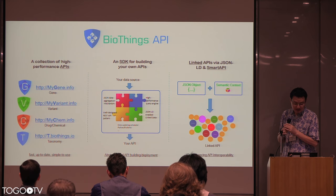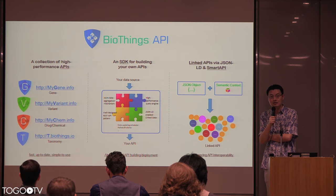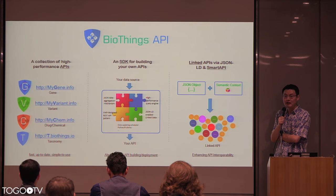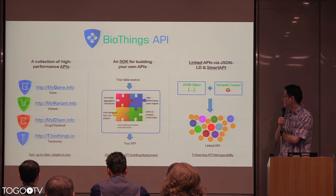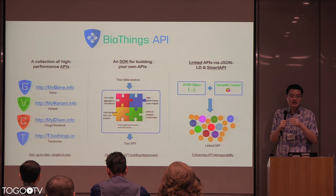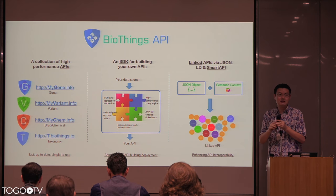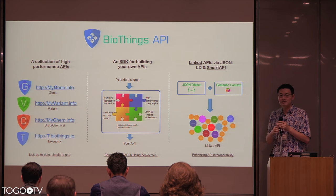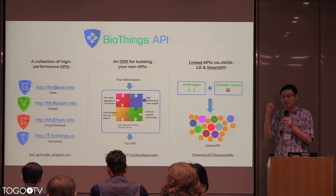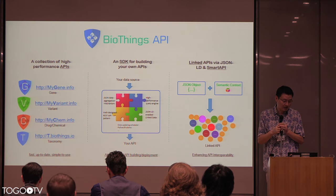The second part is that we've built a so-called BioThings SDK. That means if you have a data source and you want to convert it to a REST API quickly, you can use this SDK to abstract a lot of repeated things — for example, monitoring the source, writing a parser, deploying to a cloud, and making it a well-formed REST API. All these repetitive things we can abstract out for you.